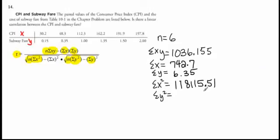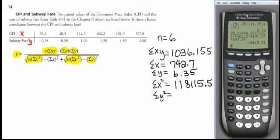And last but not least, I'm going to square all the y's and add the squares together. So 0.15 squared, plus 0.35 squared, plus 1 squared, plus 1.35 squared, plus 1.5 squared, plus 2 squared. And that gives me a sum of 9.2175.